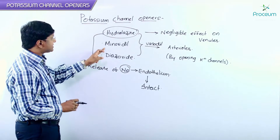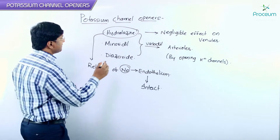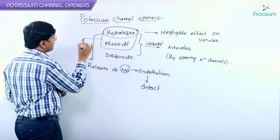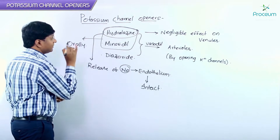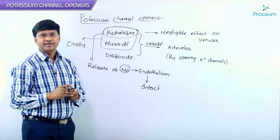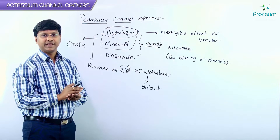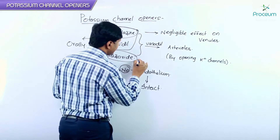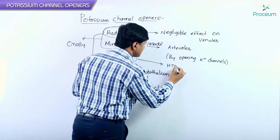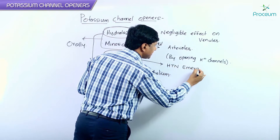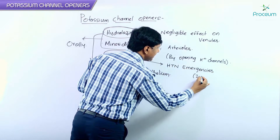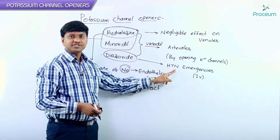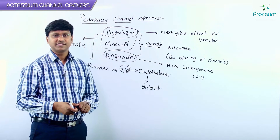Among these drugs, minoxidil and hydralazine can be given orally for the treatment of severe hypertension. Whereas diazoxide is given in hypertensive emergencies via the intravenous route.